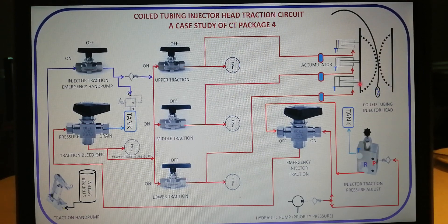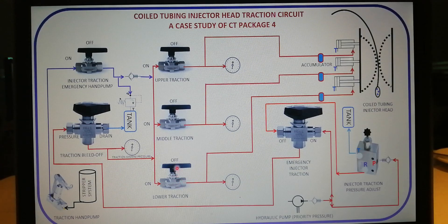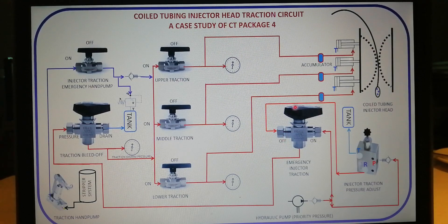Note: to use emergency injector traction for this design, you first turn on each of these valves so as to allow flows of hydraulic to their respective traction cylinders. But after applying the hydraulic pressure to the traction cylinders, endeavor to return each of these valves to the off position. Also take note: under normal working operation, this valve must remain in the off position.